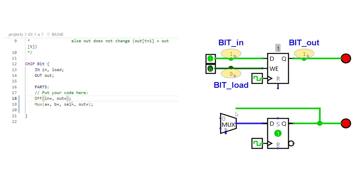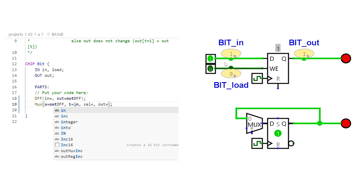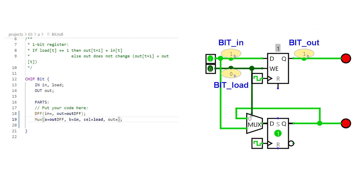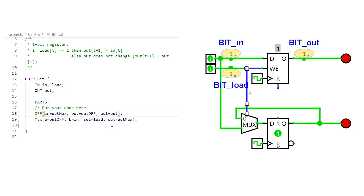So we use a multiplexer to select the input to the D flip-flop. We connect the D flip-flop output to the first input of the MUX and the in signal to the second input, then the load signal to the selection input. Its output goes to the D flip-flop as input. The D flip-flop output is also the bit chip's output. When load is off, the D flip-flop output is fed back to its input simulating bit storage. When load is on, the in signal of the bit chip is selected and the D flip-flop will latch to its value on the rising edge of clock, simulating a load operation.